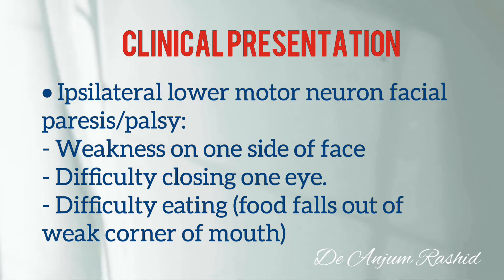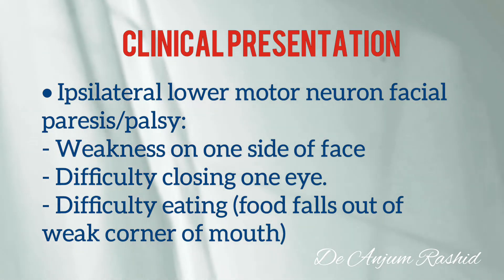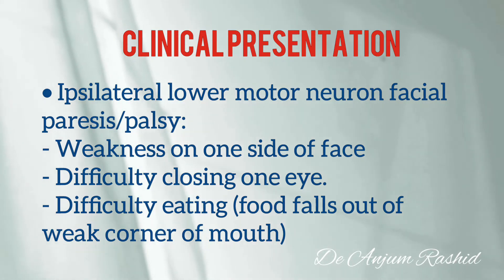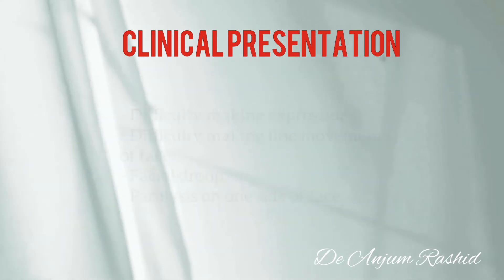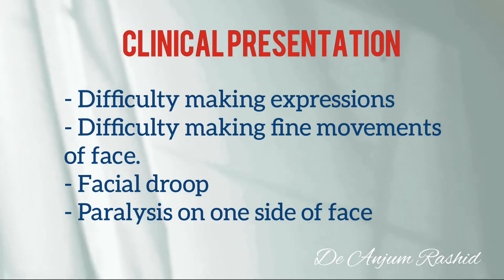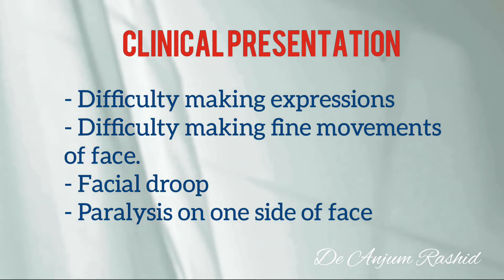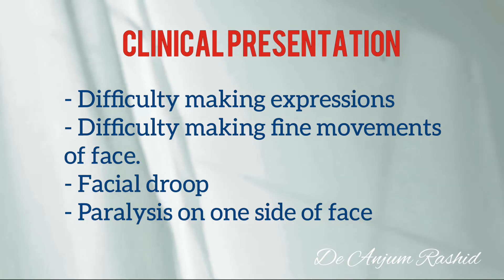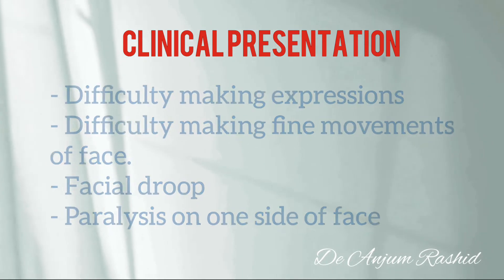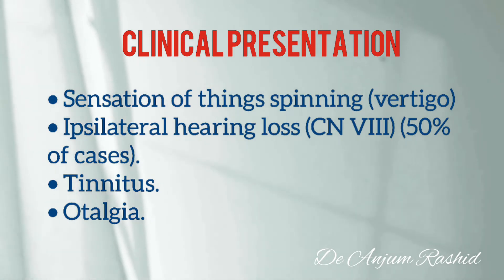There is ipsilateral lower motor neuron facial paresis or palsy, manifested as weakness on one side of the face causing difficulty closing one eye, difficulty eating as food falls out of the weak corner of the mouth, difficulty making facial expressions and fine movements of the face.